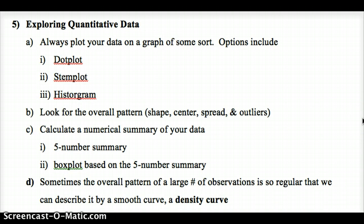Some ways we've already looked at exploring quantitative data are dot plots, stem plots, and histograms. We always want to look for the overall pattern using SOCS: shape, outliers, center, and spread. We can also use a five-number summary or a box plot. Sometimes, with a large number of observations and a regular pattern, we can describe it with what we call a density curve, which is going to be really helpful as we move forward.